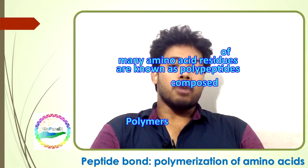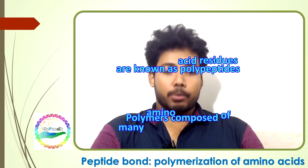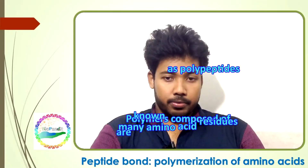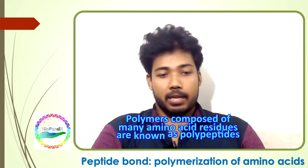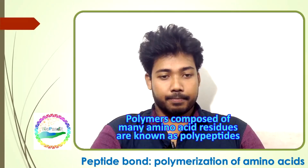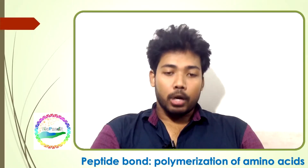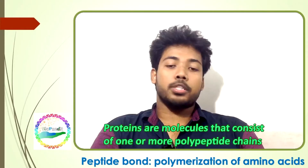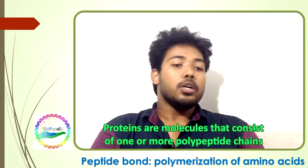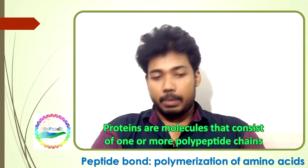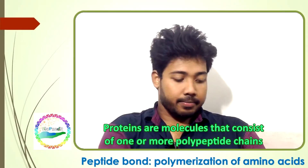Polymers composed of many amino acid residues are known as polypidates. Proteins are molecules that consist of one or more polypidate chains.